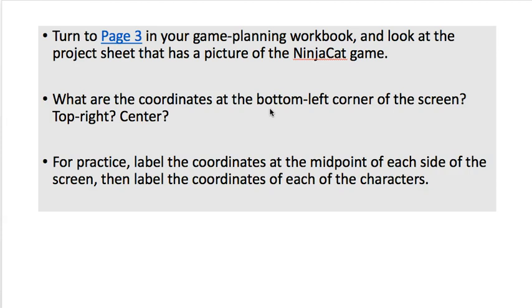For practice, label the coordinates at the midpoint of each side - the bottom center, top center, on the right-hand side, and on the left-hand side. What are the midpoints? And then also make a little guess about where ninja cat, the dog, and the ruby are. Make a guess as to what you think their coordinates might be. First figure out those midpoints, then make a guess as to what those coordinates might be and just write them right on your notebook page. Pause the video and do that.